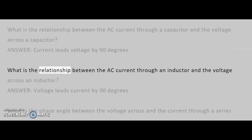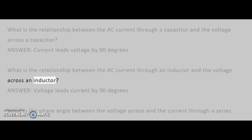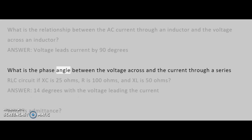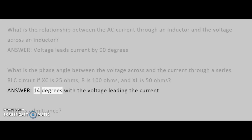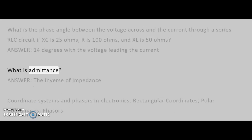What is the phase angle between the voltage across and the current through a series RLC circuit if XC is 25 ohms, R is 100 ohms, and XL is 50 ohms? Answer: 14 degrees, with the voltage leading the current. What is admittance? Answer: The inverse of impedance.